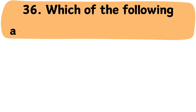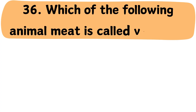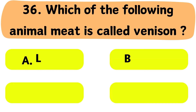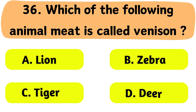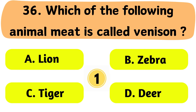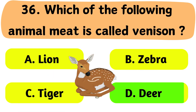Question No. 36: Which of the following animal's meat is called Venison? A. Lion. B. Zebra. C. Tiger. D. Deer. The correct answer is Option D: Deer.